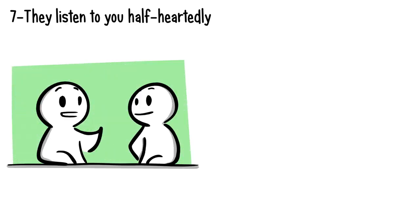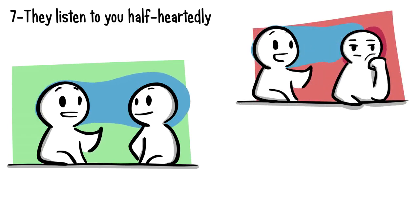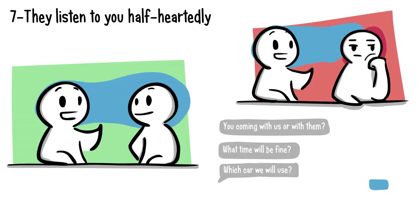Number seven: They listen to you half-heartedly. When we care about someone, we usually do our best to listen to what they say. But if someone is only listening to half of your story and zones out for the rest of it, it's clear they just aren't that invested in you. Other indicators include scanning over your messages instead of fully reading them, giving you only half the answers you need.